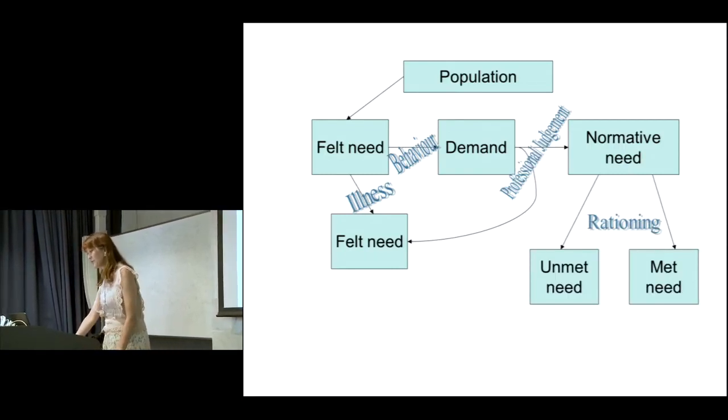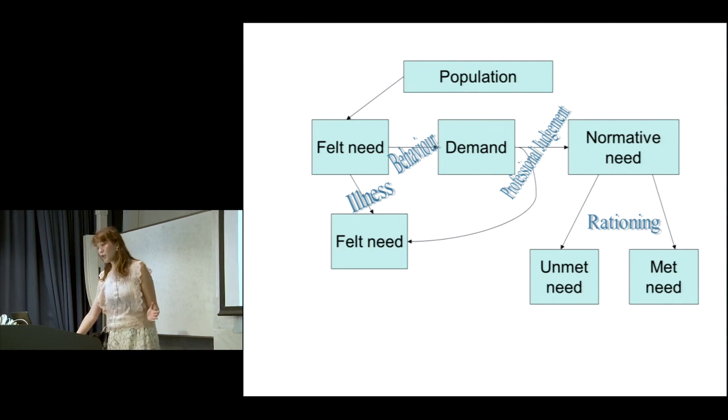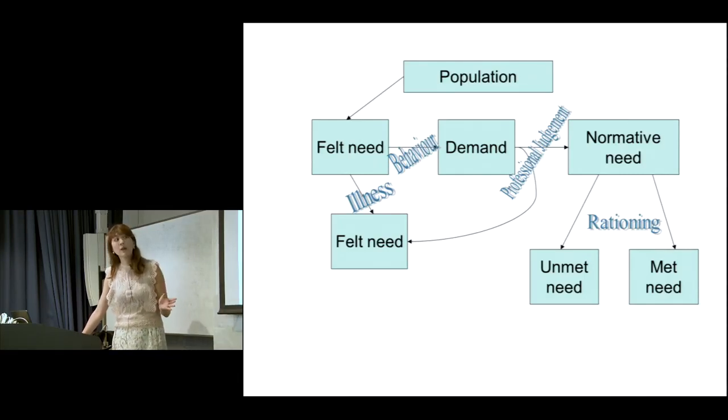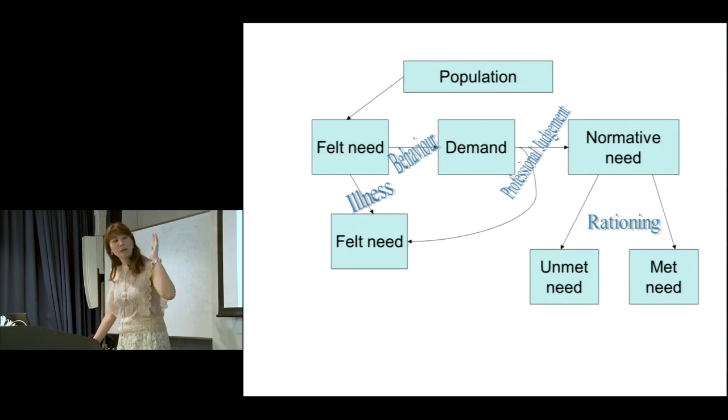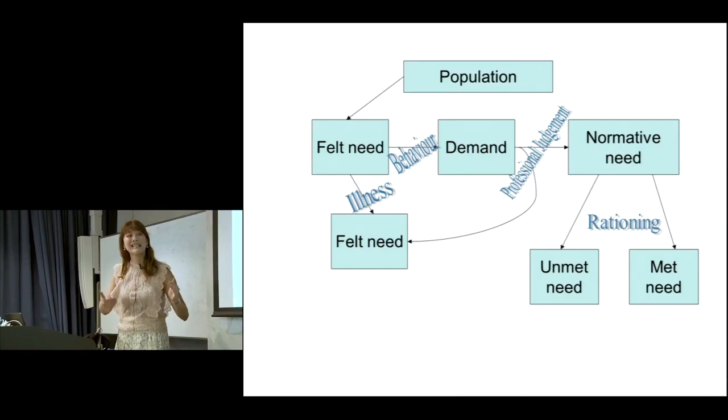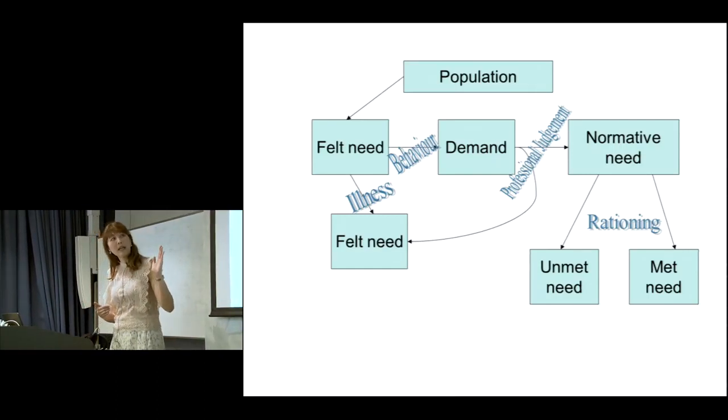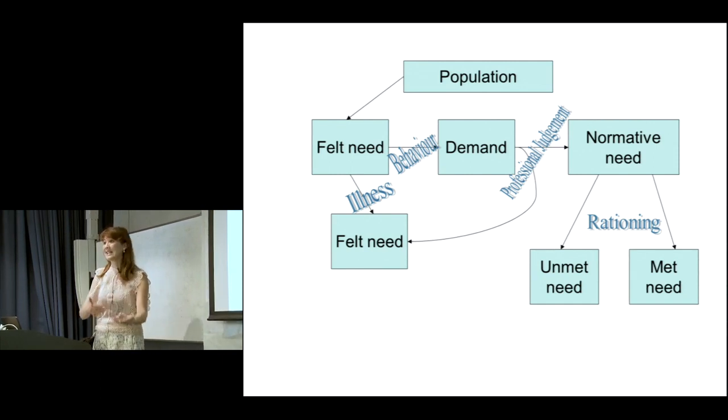Afterwards, if the clinician has decided you have a normative need, there's one of two things that occurs. Your need is met immediately where the doctor treats you or the pharmacist gives you a prescription and your need has been met. Or there's rationing. It's impossible for all health systems and healthcare services to meet needs straight away. For example, waiting lists is a form of this. You might not be able to meet your need immediately. You still have a normative need, it's just not fixed immediately. It might be a bit of a wait.